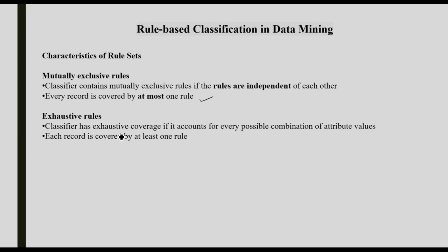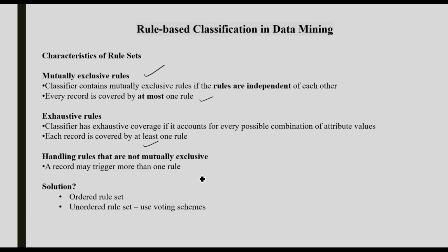The next characteristic is exhaustive rules. An exhaustive classifier has exhaustive coverage if it accounts for every possible combination of attribute values. However, sometimes rules may not be mutually exclusive — a record may trigger more than one rule. The solution is an ordered rule set or an unordered rule set with a voting scheme.